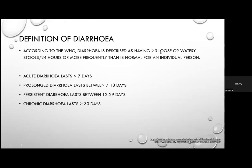We'll start with the definition of diarrhoea. According to the World Health Organization, diarrhoea is described as having three or more loose or watery stools in a 24-hour period, or more frequently than is normal for an individual. Arbitrarily, it's defined by consistency — liquid or semi-liquid — frequency of three or more stools per 24 hours, and increased stool volume.